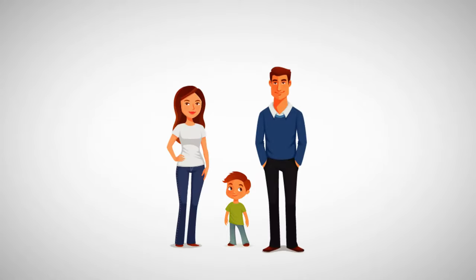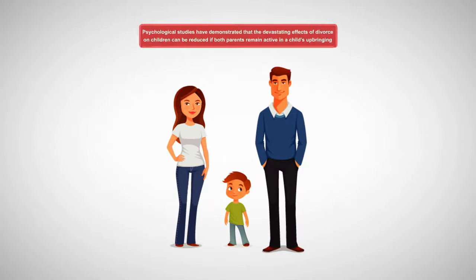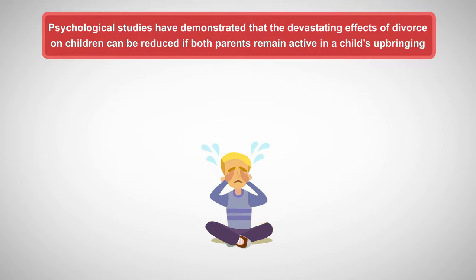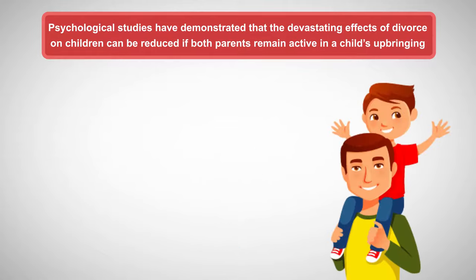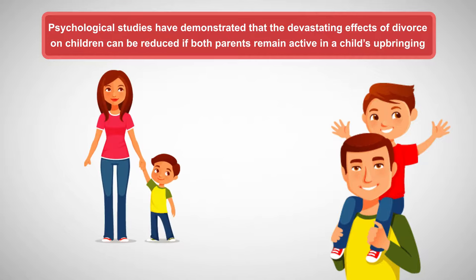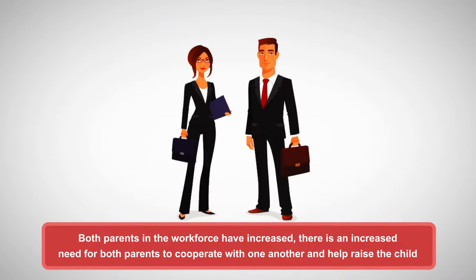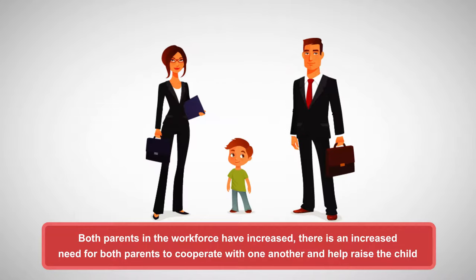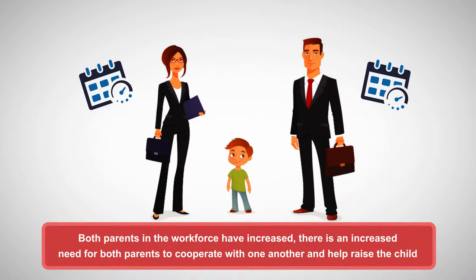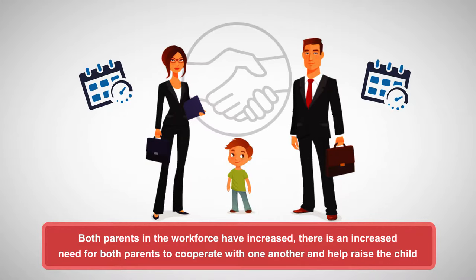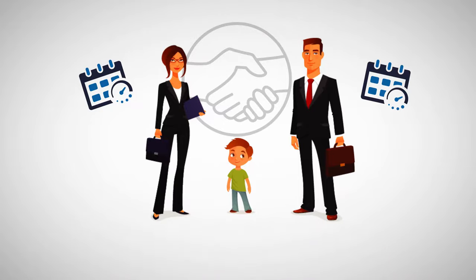With the advent of new research and studies, joint physical custody arrangements have become more common for a number of reasons. First, psychological studies have demonstrated that the devastating effects of divorce on children can be reduced if both parents remain active in a child's upbringing. Psychologists argue that by maintaining relationships and living with both parents, children can better handle the upheavals caused by divorce. Second, as the number of households with both parents in the workforce have increased, there is an increased need for both parents to cooperate and help raise the child. By awarding joint physical custody, each parent's work schedule is considered so that an arrangement is reached allowing both to best take care of the child.